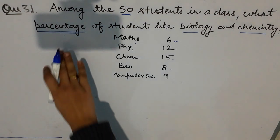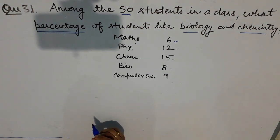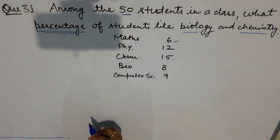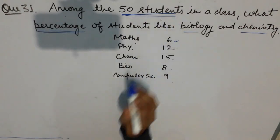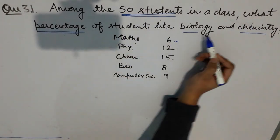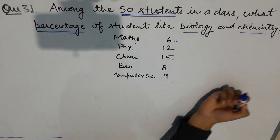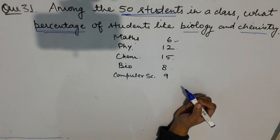Hello students, today we are doing the mental ability paper of TNPSC Group 1 2015. We have question number 31 which says: among the 50 students in a class, what percentage of students like biology and chemistry? The total number of students is 50, and from the given data you first have to find how many students like biology and chemistry.